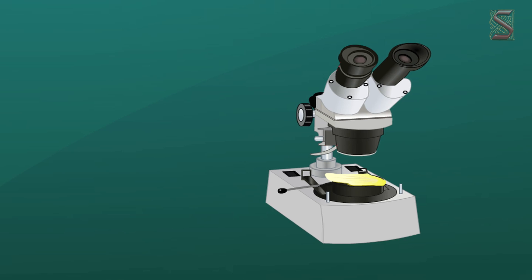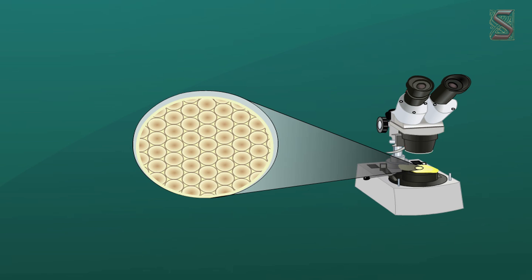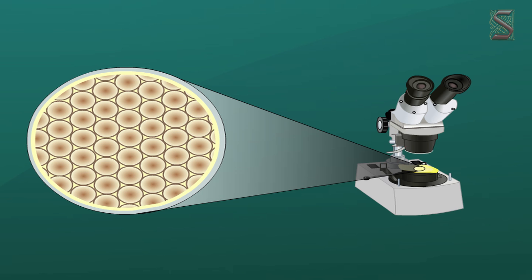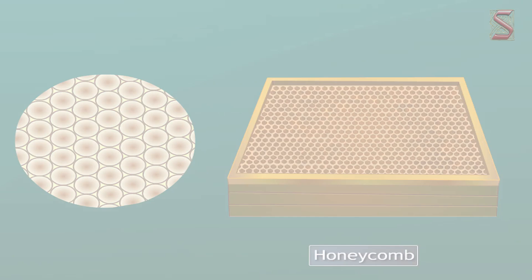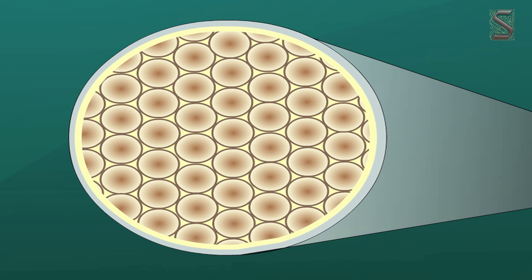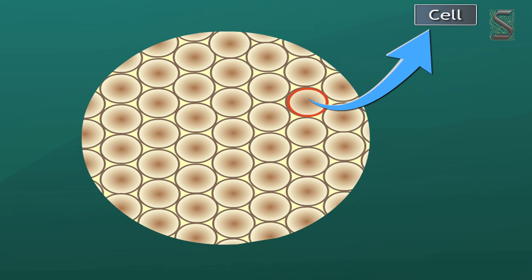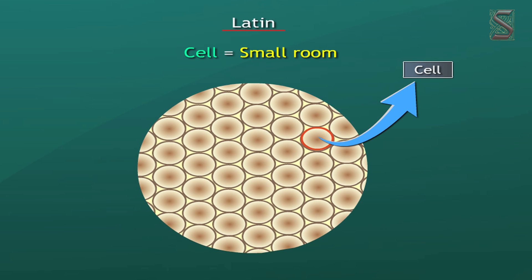He took thin slices of cork and observed them under a microscope. He noticed partitioned boxes or compartments in the cork slice. These boxes appeared like a honeycomb. He also noticed that one box was separated from the other by a wall or partition. Thus Hooke coined the term 'cell' for each box.